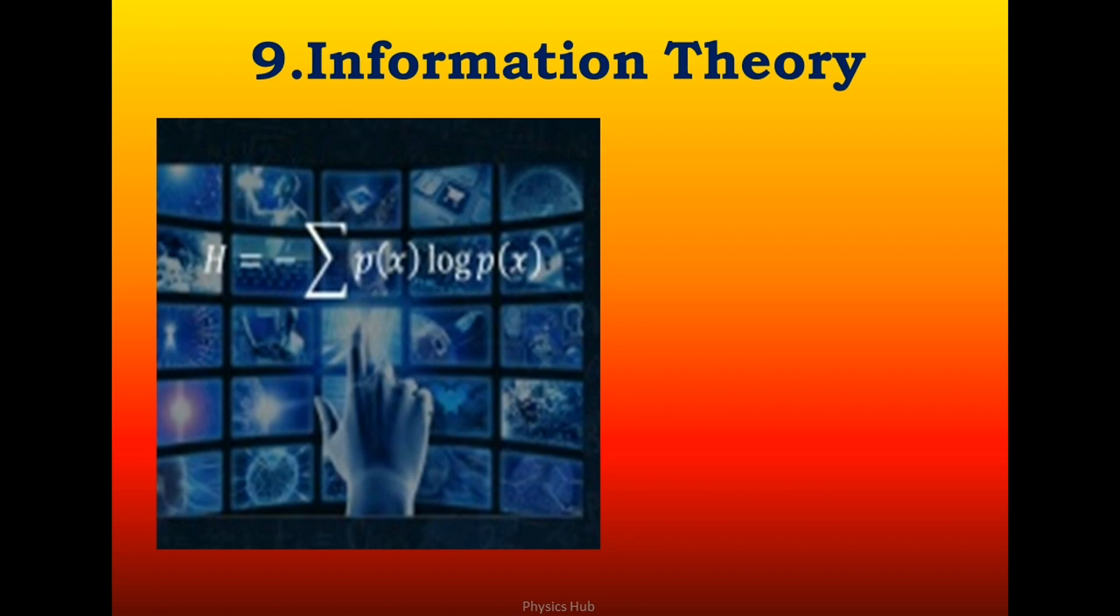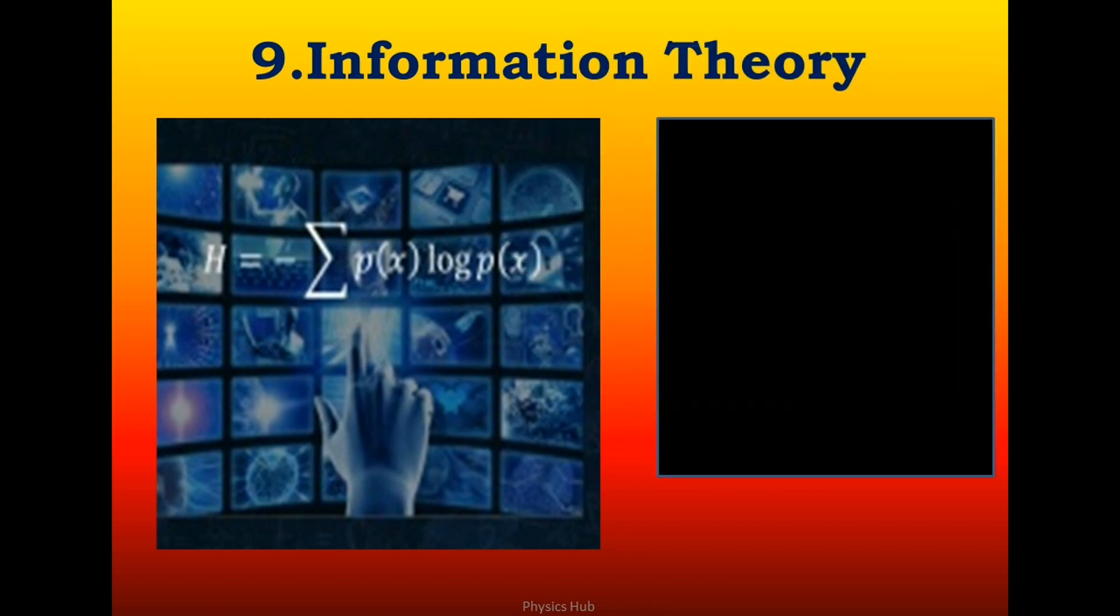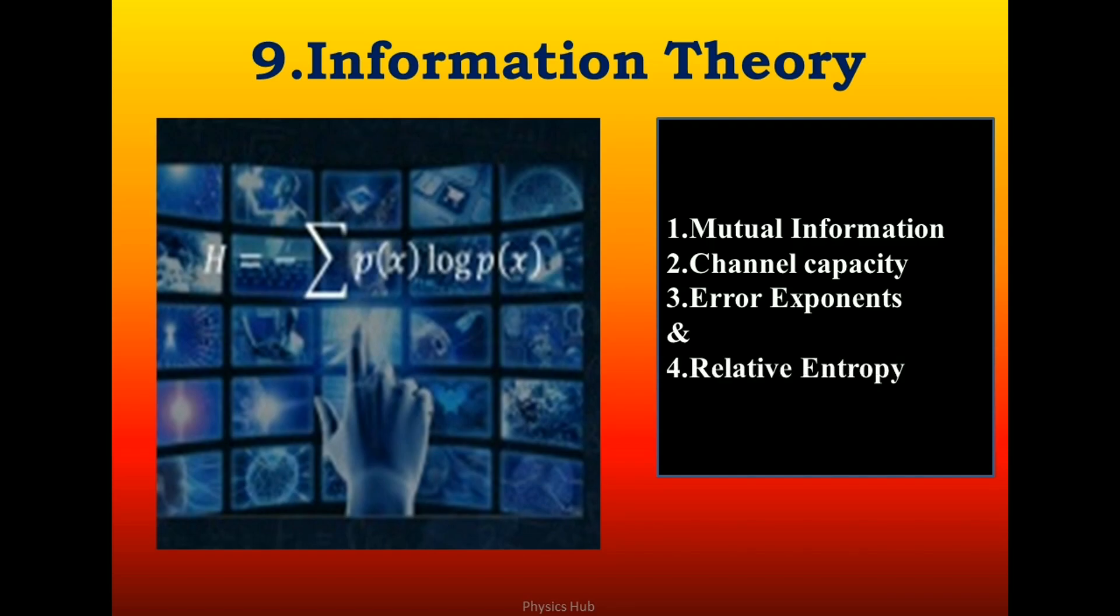A key measure in information theory is entropy. Entropy quantifies the amount of uncertainty involved in the value of a random variable or the outcome of a random process. For example, identifying the outcome of a fair coin flip with two equally likely outcomes provides less information, or lower entropy, than specifying the outcome of a roll of a die with six equally likely outcomes. Some other important measures in information theory are mutual information, channel capacity, error exponents, and relative entropy.